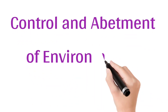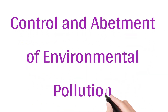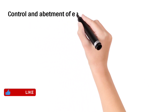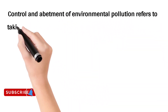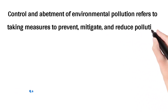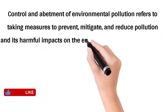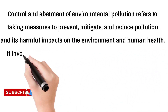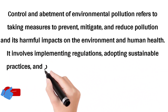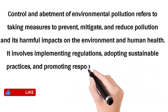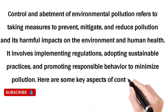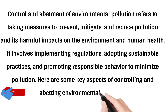Control and Abetment of Environmental Pollution refers to taking measures to prevent, mitigate, and reduce pollution and its harmful impacts on the environment and human health. It involves implementing regulations, adopting sustainable practices, and promoting responsible behavior to minimize pollution. Here are some key aspects of controlling and abetting environmental pollution.